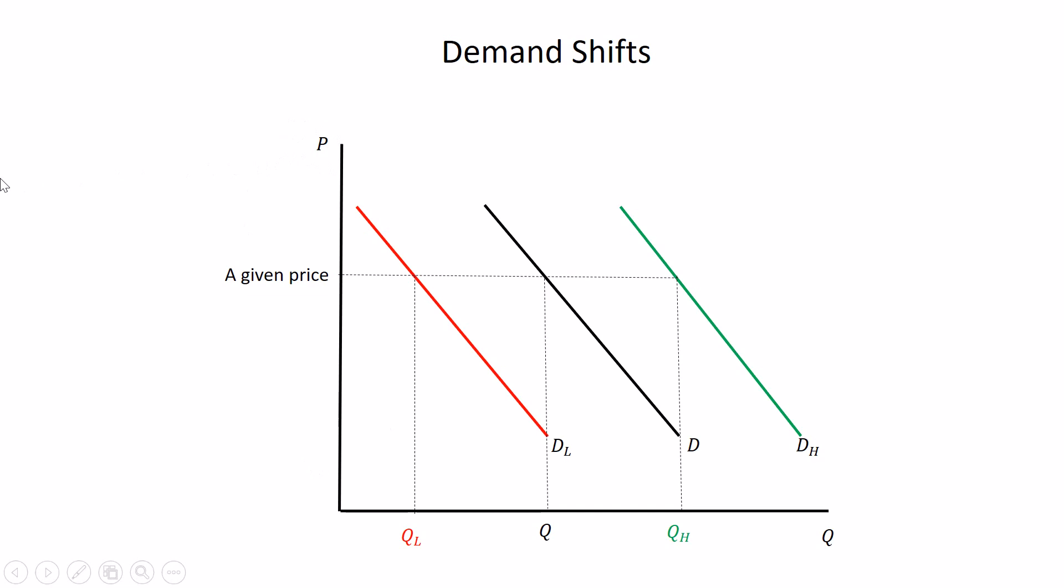I do not want you to think about this in terms of up or down because that'll mess you up when you get to supply. Left or right is good for both. There are lots of things that can shift a demand curve. We can mess with people's income, the price of related goods, their tastes, population and demographics, expected future prices. The one thing that does not change a demand curve is the price.